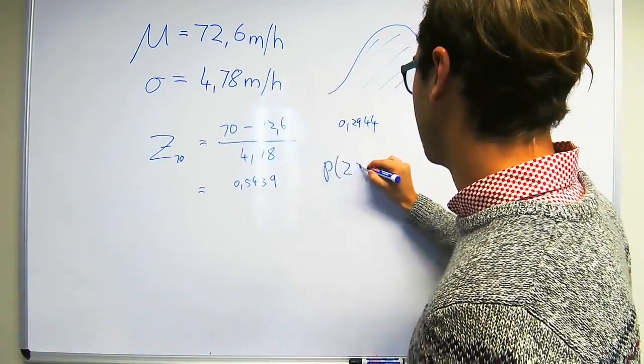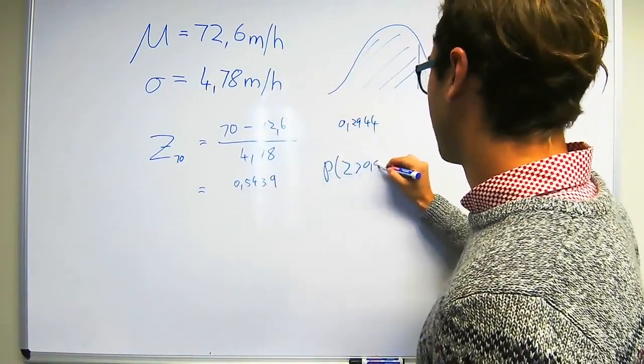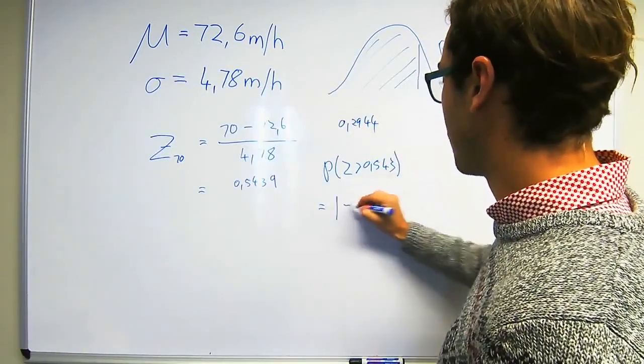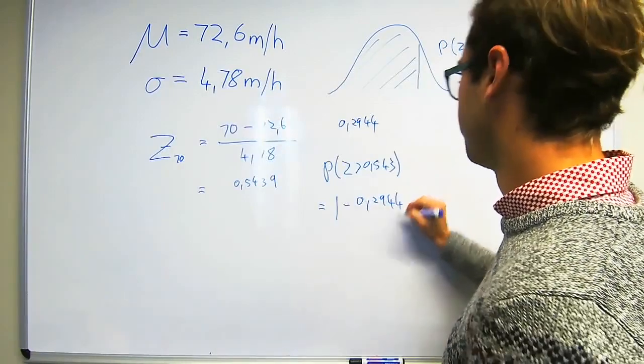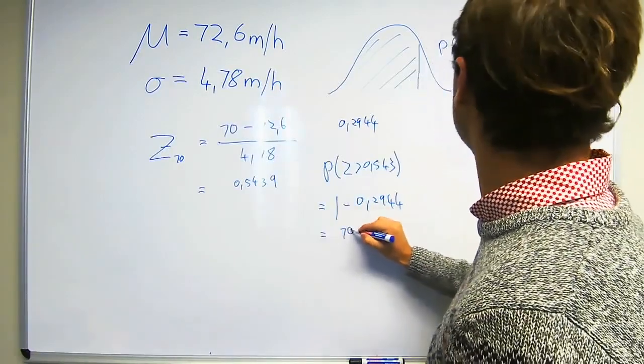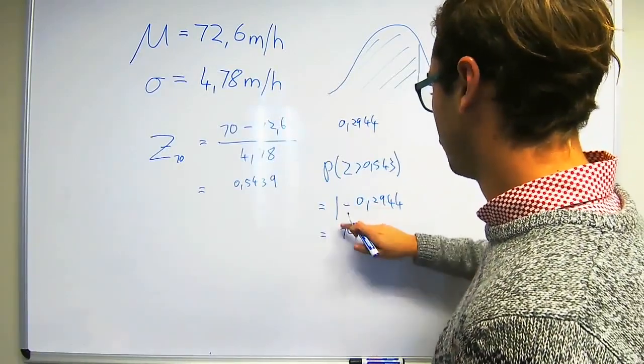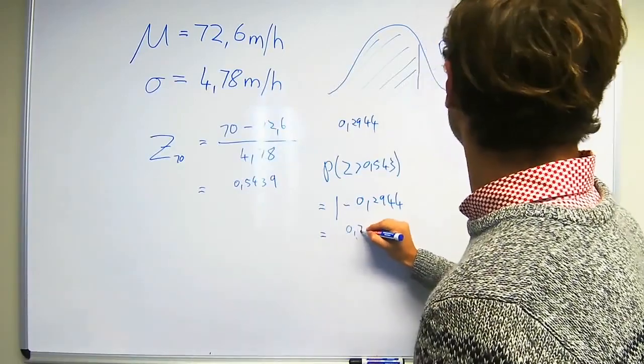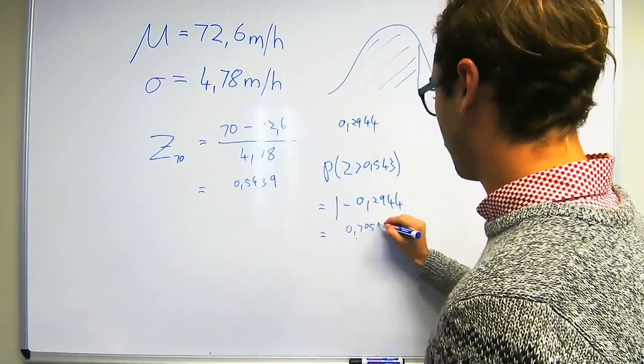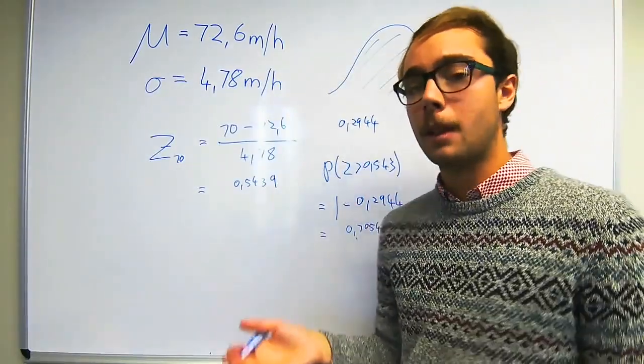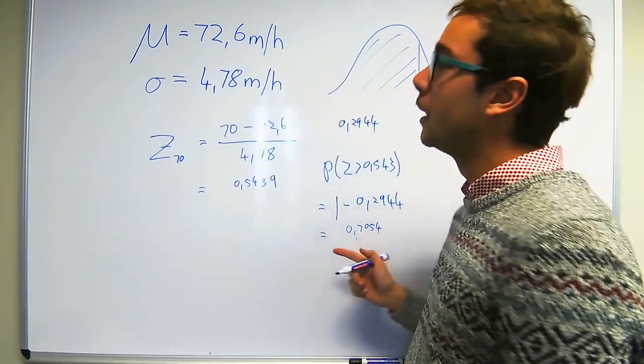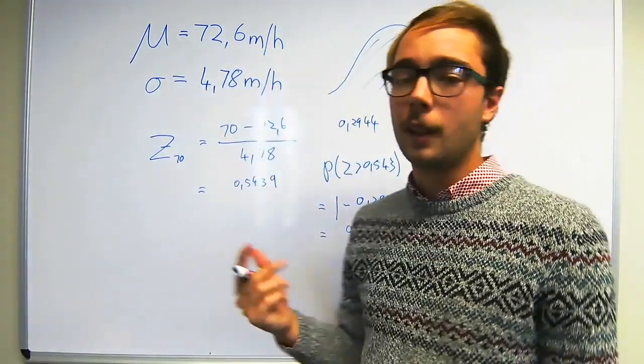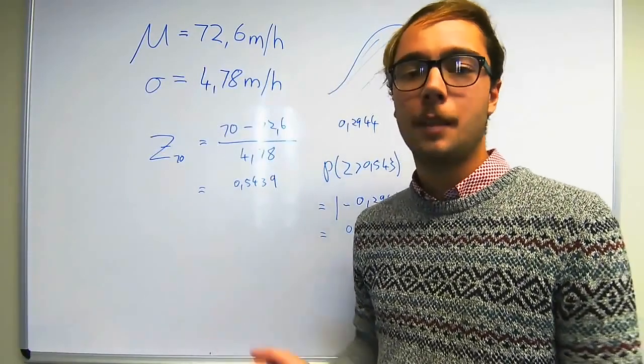Therefore, the probability that Z is greater than minus 0.5439 is equal to 1 minus 0.2944, which gives us 0.7054. So 70% of vehicles travel above the speed limit. That might seem a lot, but if you actually look at your mean, which is 72.6 with a speed limit of 70 miles per hour, it makes sense.